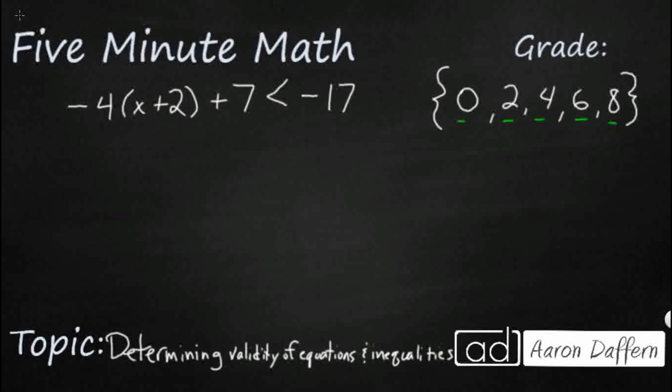And so we're not actually going to solve for x here. We could if we wanted to, but we are being asked to actually take these numbers and simply plug them in. So we need to make sure we understand how that works. So let's start with 0. We're just going to start with x equals 0. So I'm going to rewrite this right here. I'm just going to put 0 plus 2 plus 7 less than negative 17.